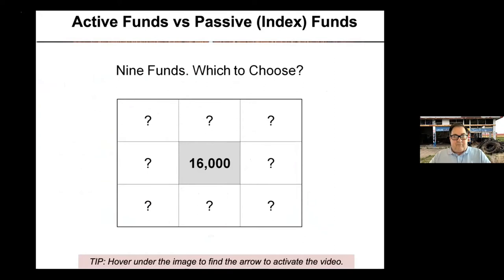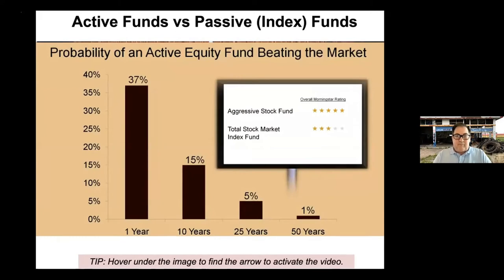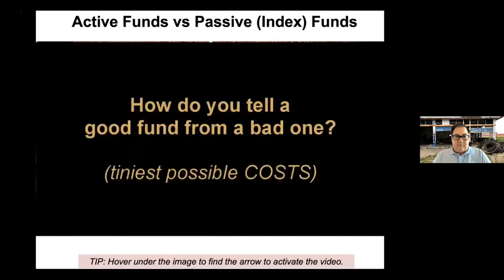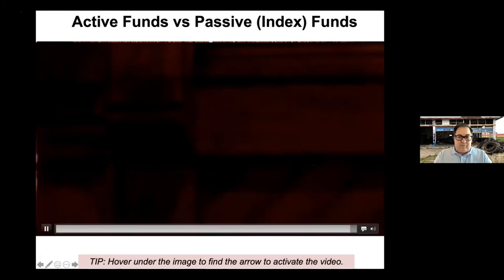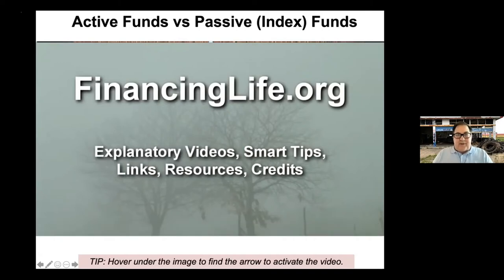Congratulations if you chose the index fund — it shows you are a rational, risk-averse investor. The star ranking can be misleading: five stars for a fund that outperformed recently but has very low chance of outperforming over the next 10 years, while the index fund rates mid-pack because it can't outperform — it tracks the market. The best predictive measures of a fund's future performance are its costs and how closely it tracks the market.